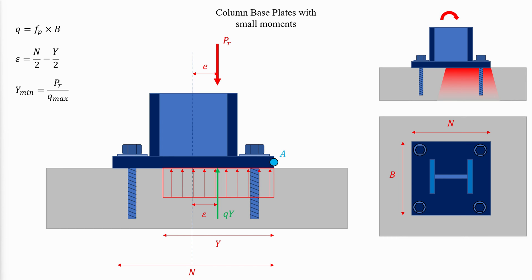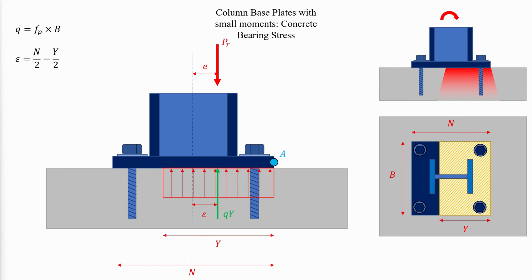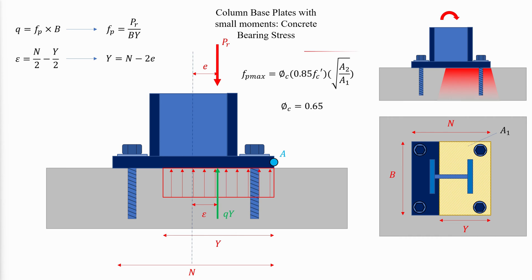In summary, for values of E less than epsilon max, the moment is small and no tension will develop in the rod. A critical value of eccentricity of the applied load combination is defined. The eccentricity should first be calculated from the applied moments and axial loads, then compared to the critical eccentricity to determine whether the moments are small or large. The concrete bearing stress is assumed to be uniformly distributed over the area Y times B. For small moments, the equation is rearranged to solve for Y, and by equilibrium the bearing force QY must equal the applied force PR, from which the bearing stress is calculated and compared to the available bearing resistance of the concrete.